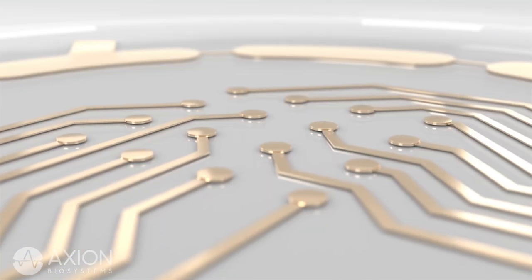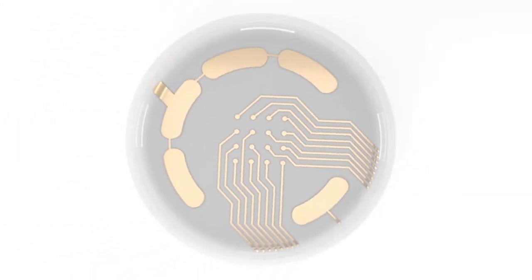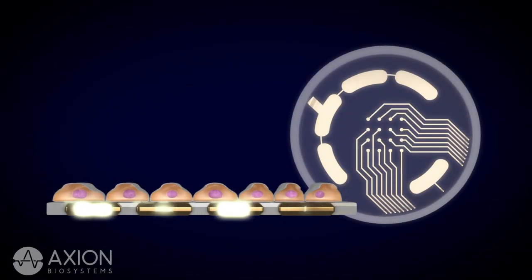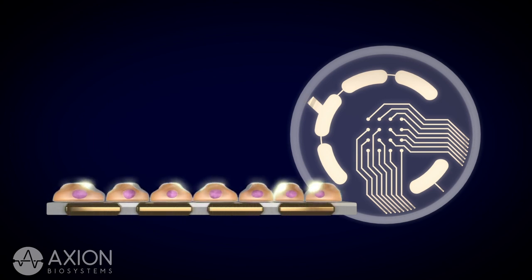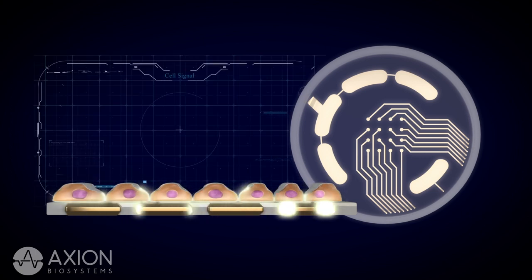An MEA is a grid of small electrodes. When embedded in the surface of a well and using only basic cell culture techniques, researchers plate electrically active cells on top of the electrodes and measure their activity without disrupting the cells.